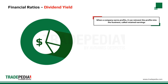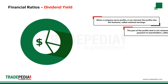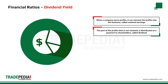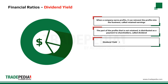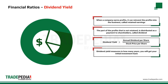When a company earns profits, it can reinvest the profits into the business — called retained earnings. The part of the profits that is not retained is distributed as a payment to shareholders, called dividend. A stock's dividend yield is calculated as the company's annual cash dividend per share divided by the current price of the stock. Dividend yield measures in how many years you will get your initial investment back. If you pay $100 for a share and it has a dividend yield of 10%, assuming this remains constant, you will need 10 years to get back your initial investment.